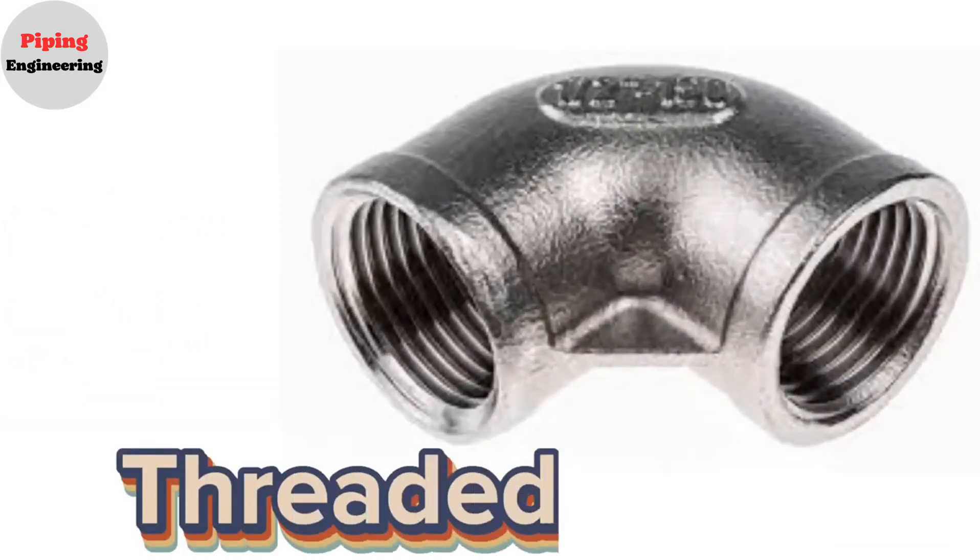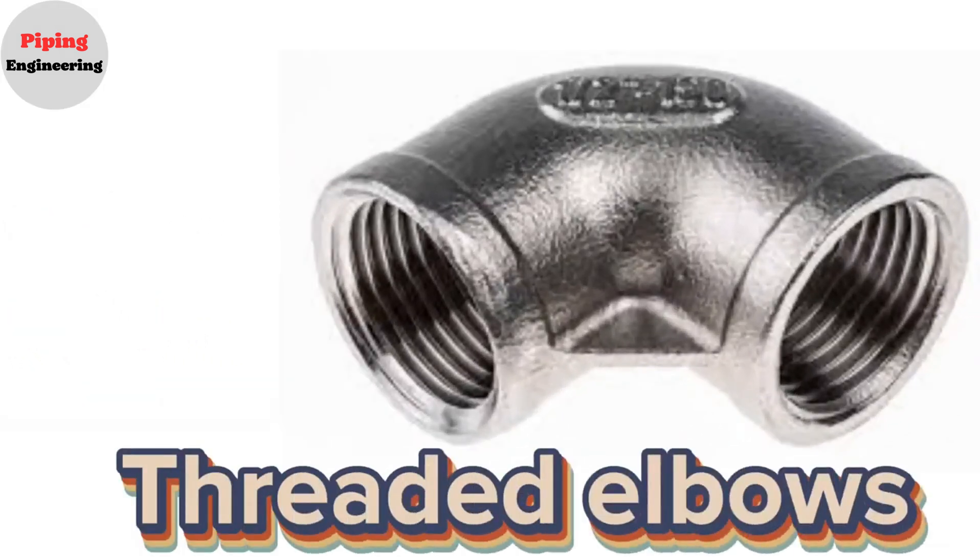One of the types of pipe elbows is threaded elbows. Threaded pipe elbow fittings consist of a female NPT thread by female NPT thread on either side of an elbow pipe fitting. Threaded elbows do not require welding and are easy to replace.